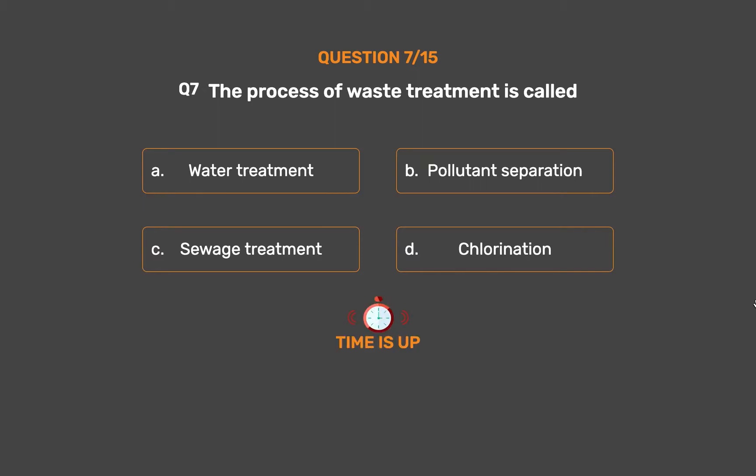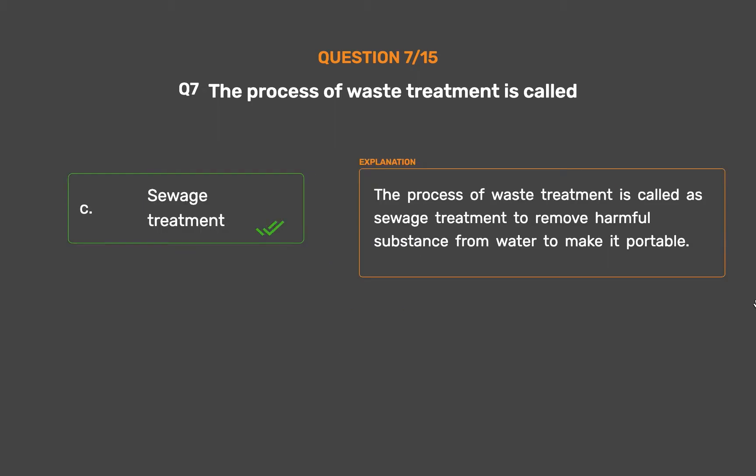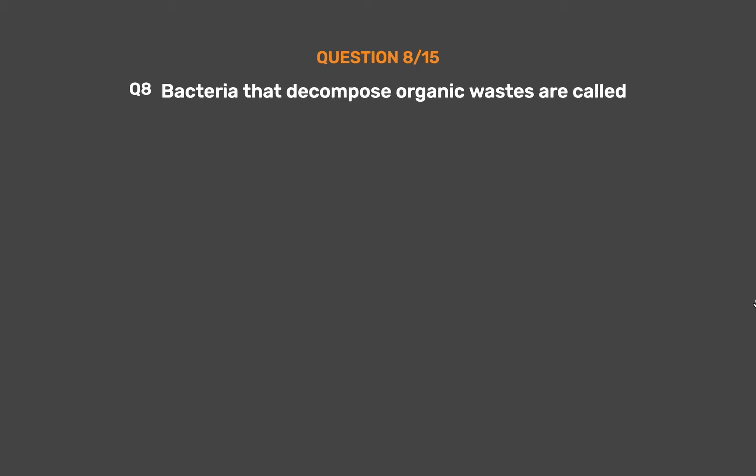The correct answer is Option C: Switch treatment. The process of waste treatment is called switch treatment, to remove harmful substances from water to make it potable.